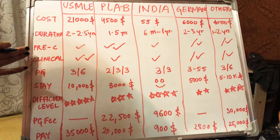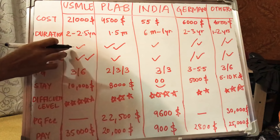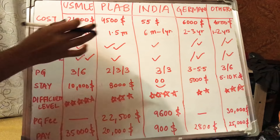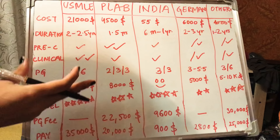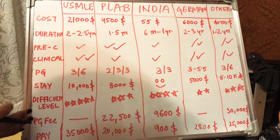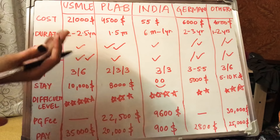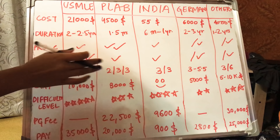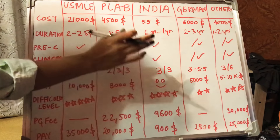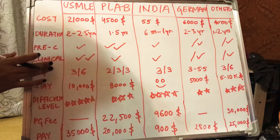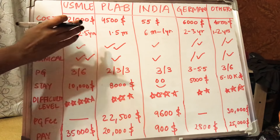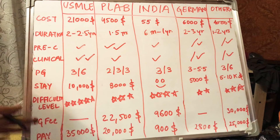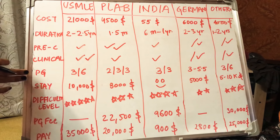For preclinical subjects, rated out of two: USMLE scores 1, PLAB scores 2 since the main focus there is on preclinical subjects, India scores 1, Germany scores 0.5 because you need to focus mainly on the German language rather than medical education, and others also 0.5. For clinical subjects: USMLE scores 2 — the highest — PLAB scores 1, India scores 1, Germany and others score 0.5. So if you're preparing for USMLE, focus mainly on clinical aspects; for PLAB, India, Germany, or others, focus mainly on preclinical subjects.